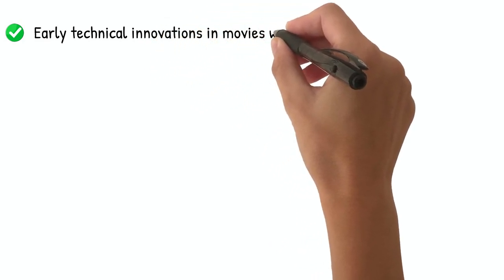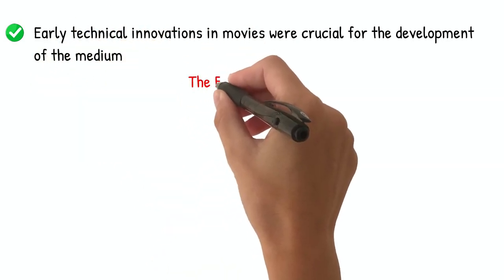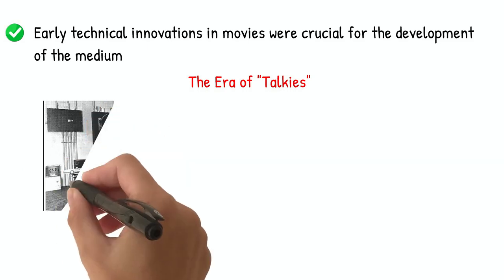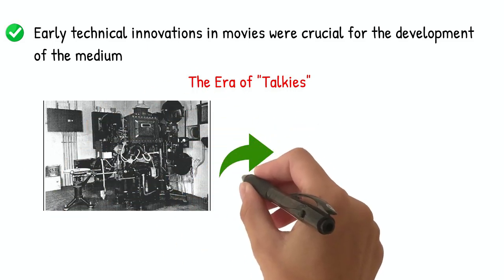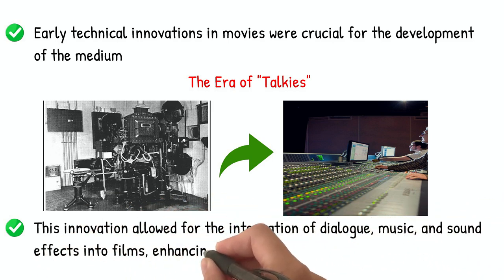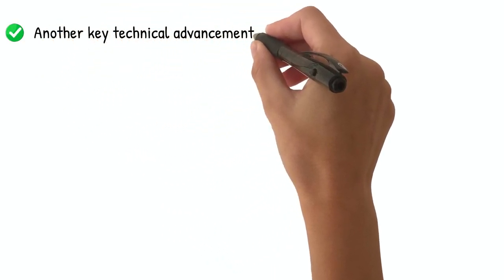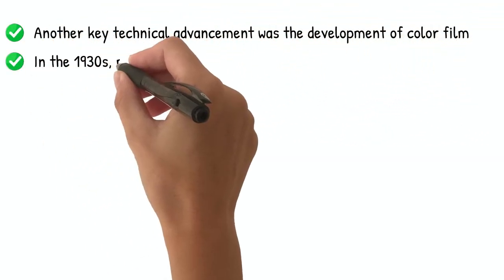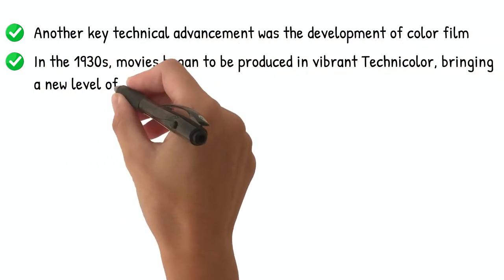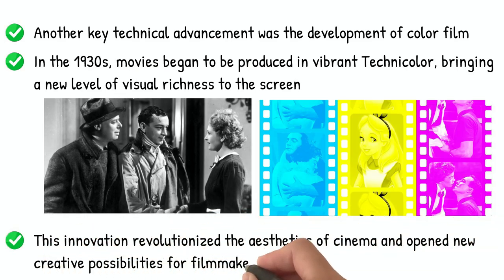Early technical innovations in movies were crucial for the development of the medium. One significant innovation was the introduction of synchronized sound in the late 1920s, which led to the era of talkies and transformed the cinematic experience. This innovation allowed for the integration of dialogue, music, and sound effects into films, enhancing storytelling capabilities. Another key technical advancement was the development of color film. In the 1930s, movies began to be produced in vibrant Technicolor, bringing a new level of visual richness to the screen. This innovation revolutionized the aesthetics of cinema and opened new creative possibilities for filmmakers.